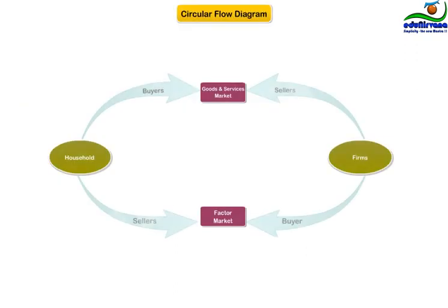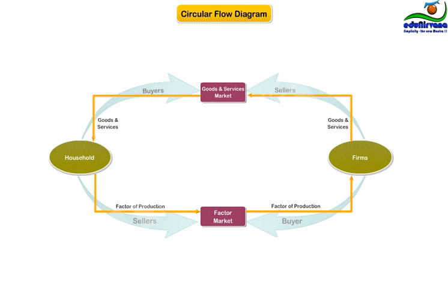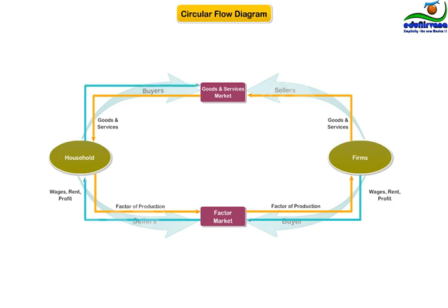Factors of production flow from households to firms, and finished products and services flow from firms to households. Firms pay wages, rent, and profits to households for providing factors of production, and households pay firms for the goods and services they consume.